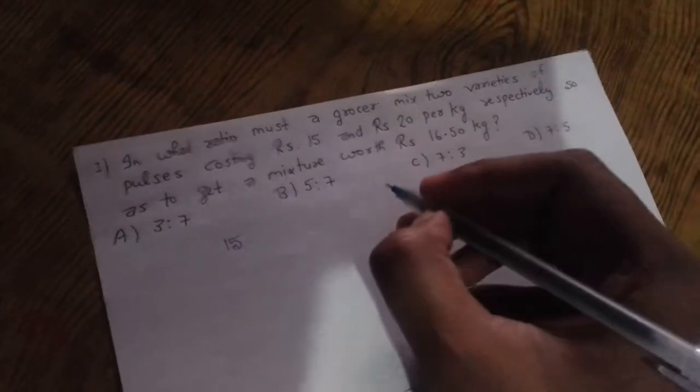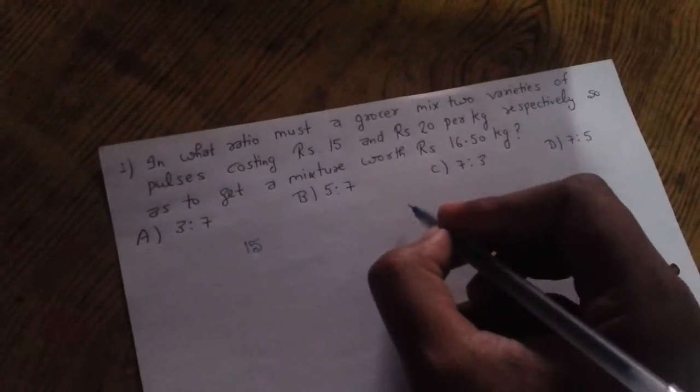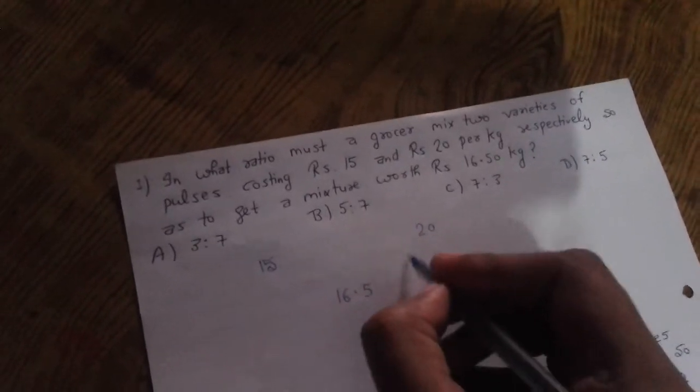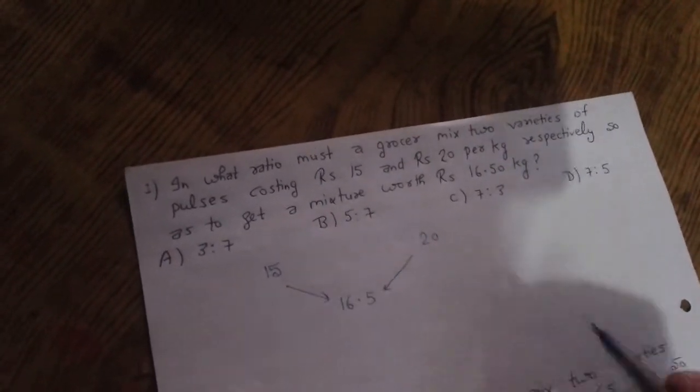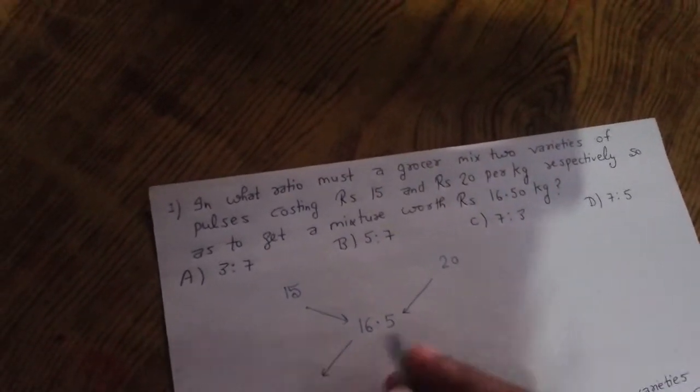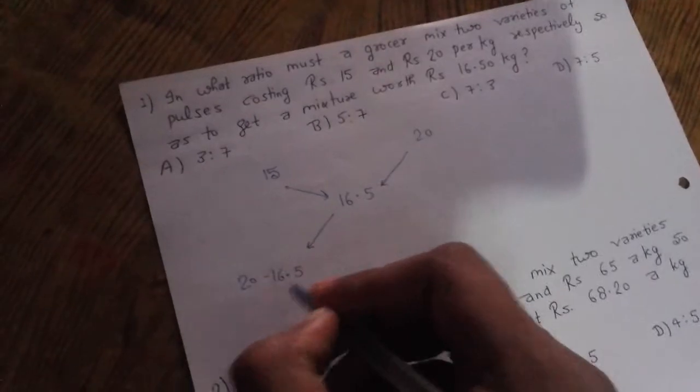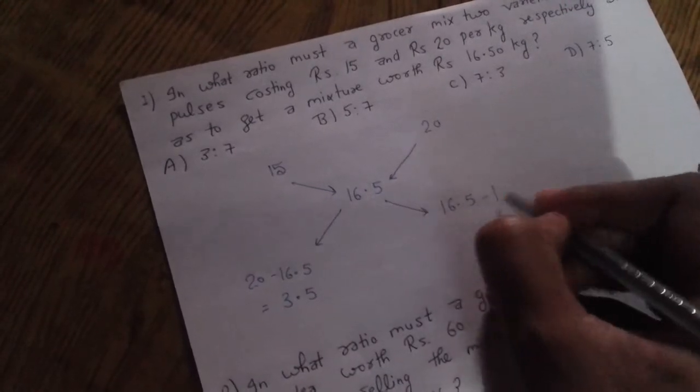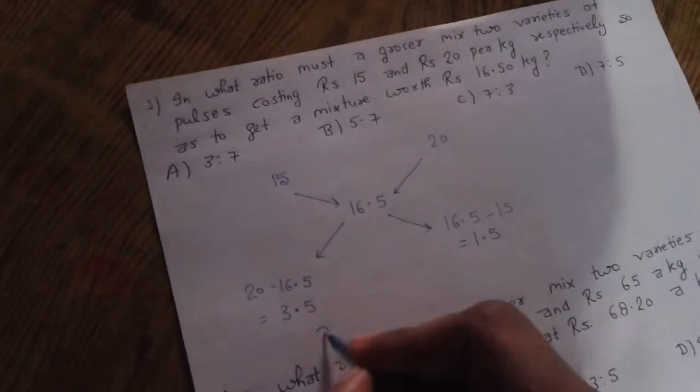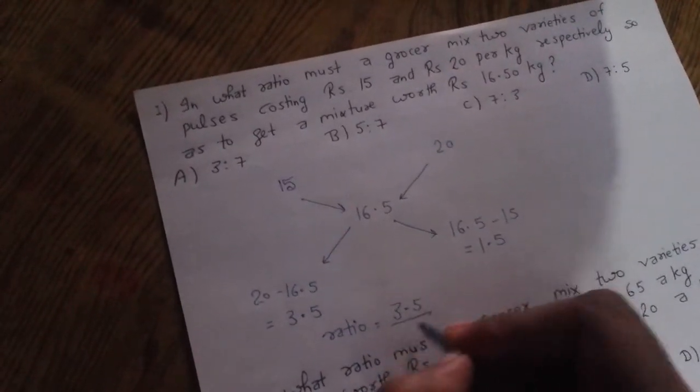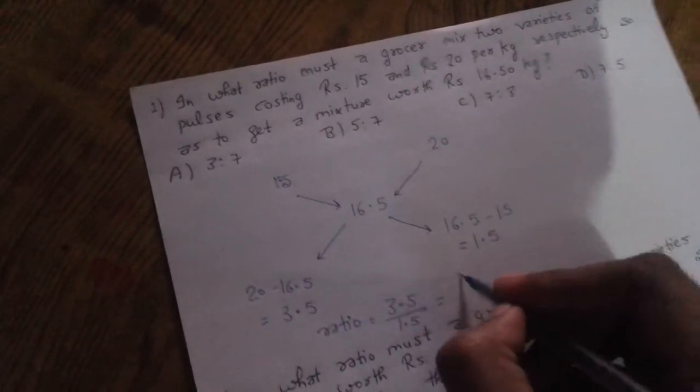Here cheaper value is Rs 15 and dearer value is Rs 20, and the middle value is Rs 16.5. So according to the alligation and mixture, let's take 20 minus 16.5, that is 3.5, and 16.5 minus 15, that is 1.5. So ratio is equal to 3.5 by 1.5, and that is 7 by 3.